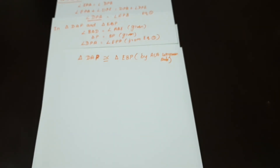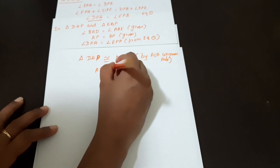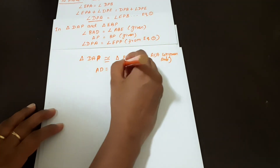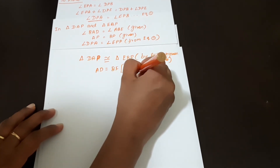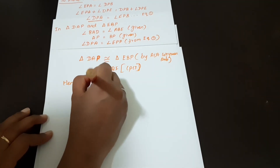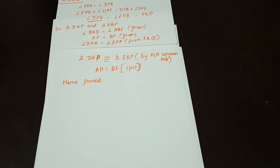Next, to prove AD is equal to BE: since the two triangles are congruent, the corresponding sides AD and BE are equal by CPCT. Hence proved. In the channel, please continue to subscribe, share, like, and comment. Thank you.